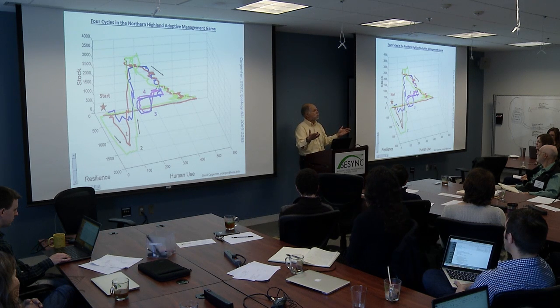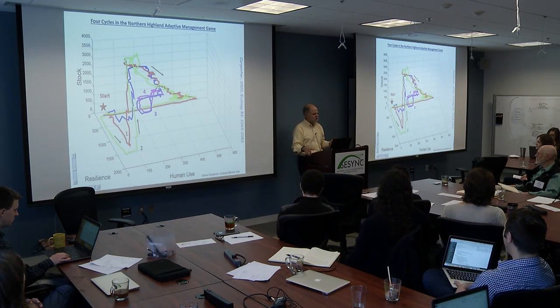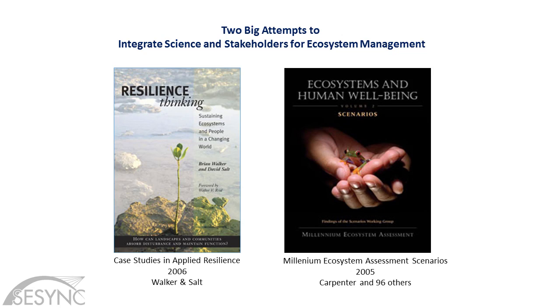Here's an example of four cycles — each color is a different cycle of a game actually played by a group of people in the Northern Highland. There's a book called Resilience Thinking and a later book called Resilience Practice by Brian Walker and David Salt that are full of case studies of applied resilience thinking in different regions around the world. The Northern Highland of Wisconsin is one of the case studies in the Resilience Thinking book.